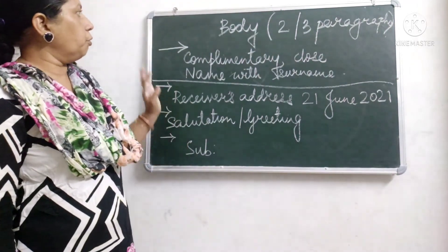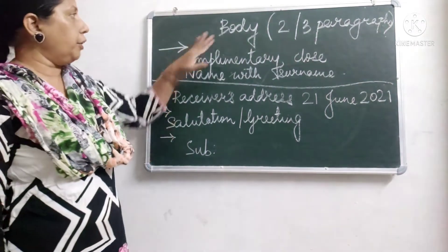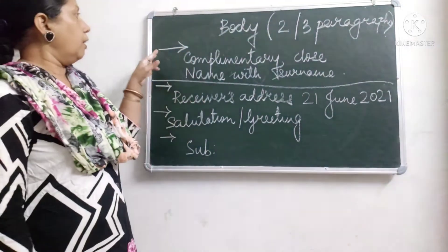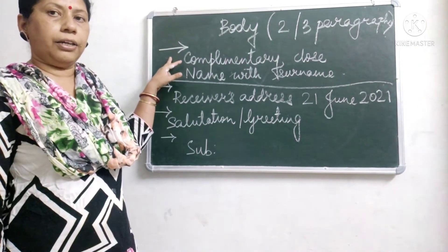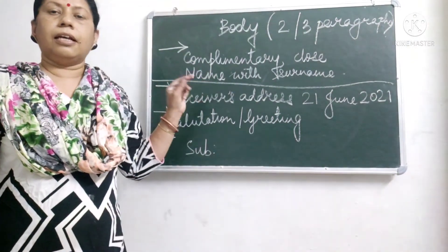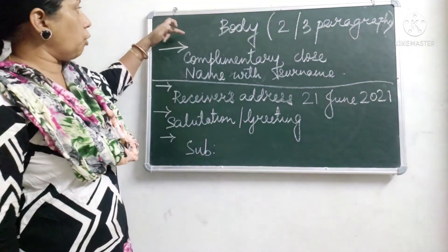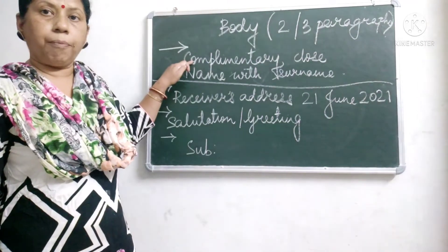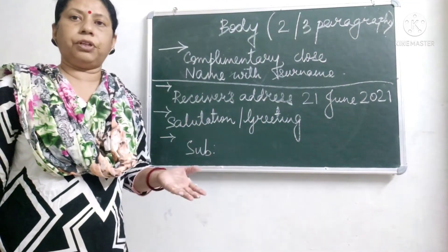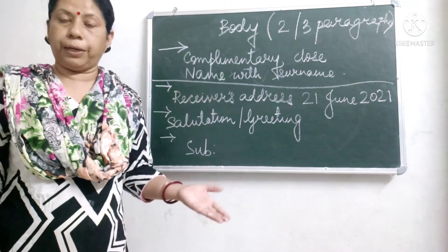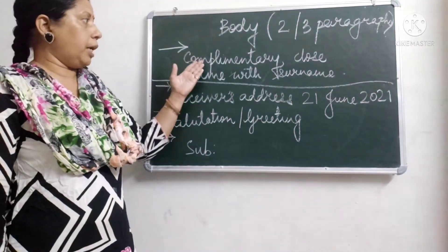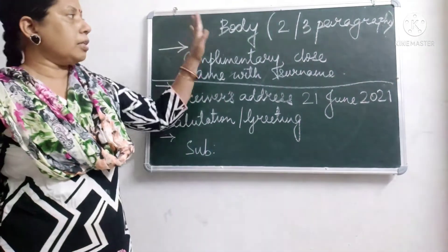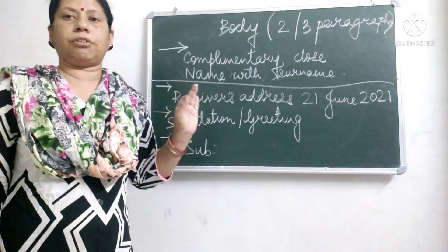After that, without leaving a line, you write the body of the letter, which consists of three paragraphs. After finishing your letter you leave a line. Then you have your complimentary close — before that you finish with 'thanking you'. In the complimentary close you write: yours truly, yours faithfully, yours sincerely, or yours obediently. Then your name with surname. Remember, this is the format of your formal letter writing.